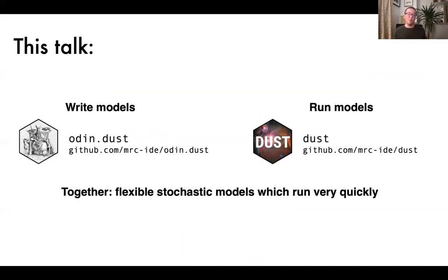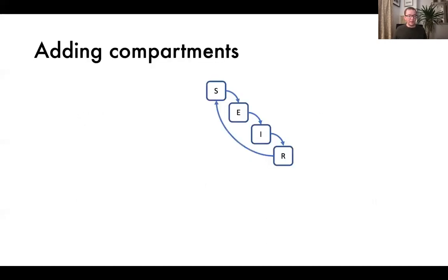I'm going to tell you about two packages that solve these problems and let you write this new class of models. You're going to write your models in the Odin language and then run them using the dust package. At the moment both packages are available in R, but hopefully coming to Python in the near future. Together, these will create flexible stochastic models which run very quickly.